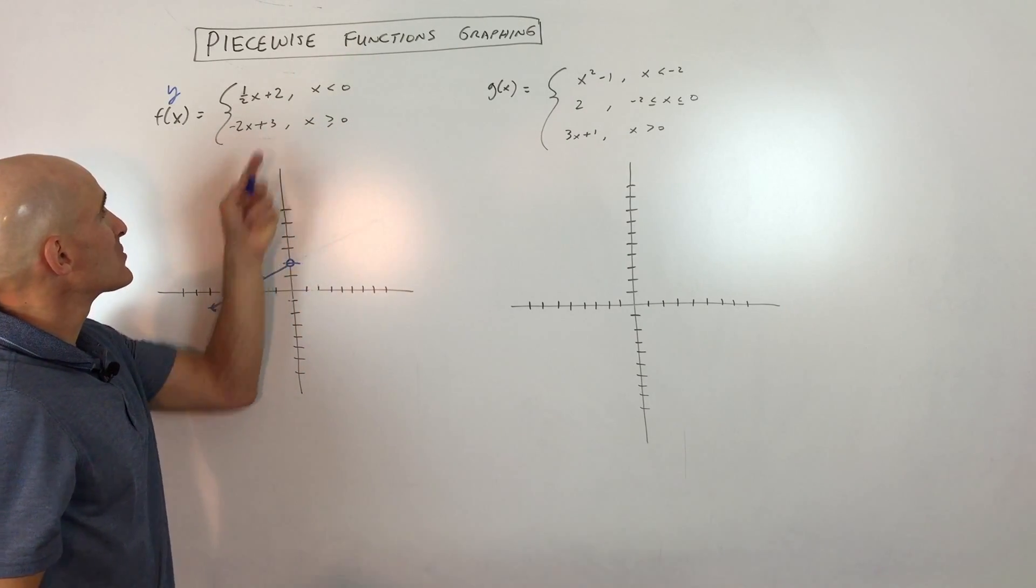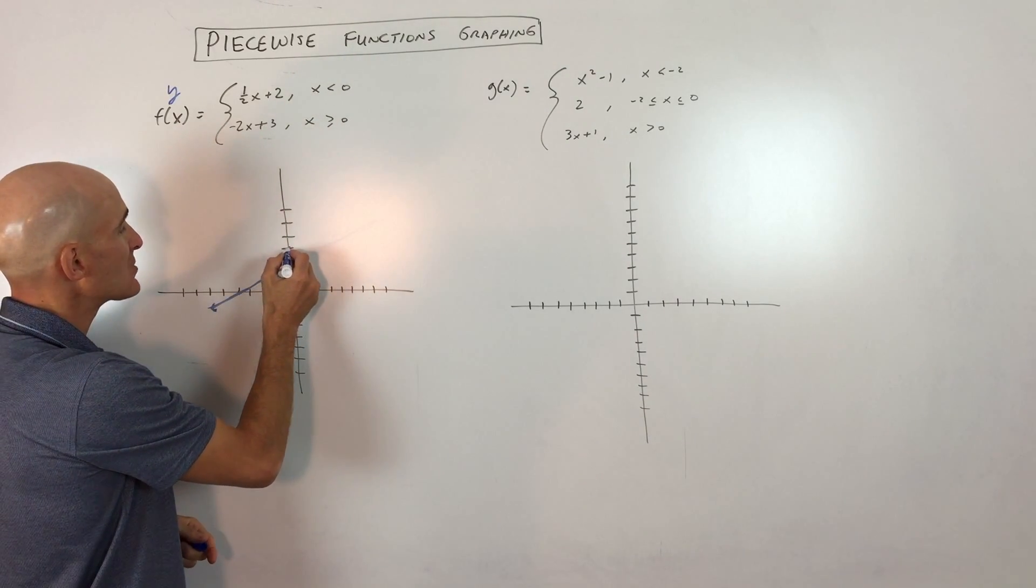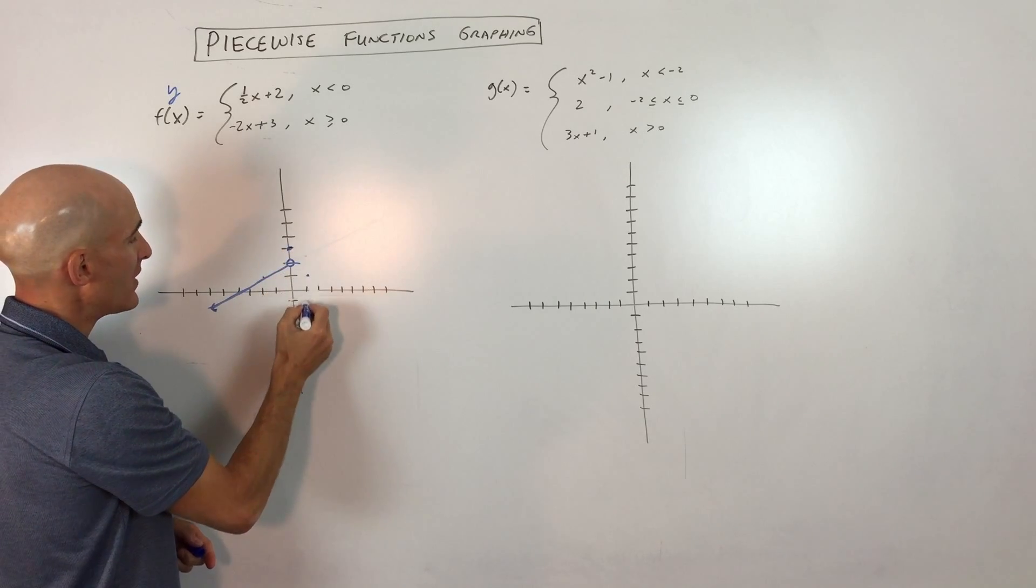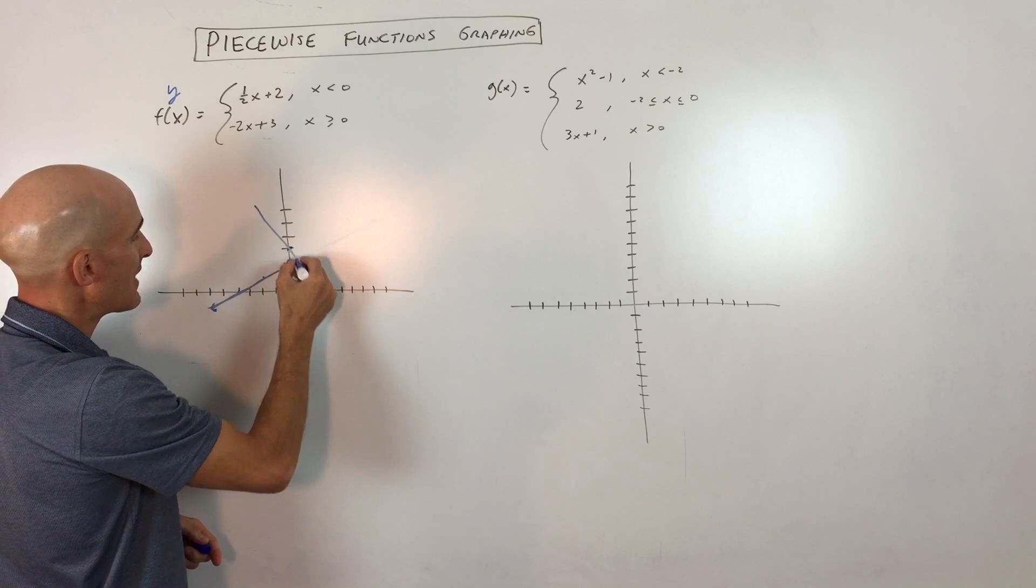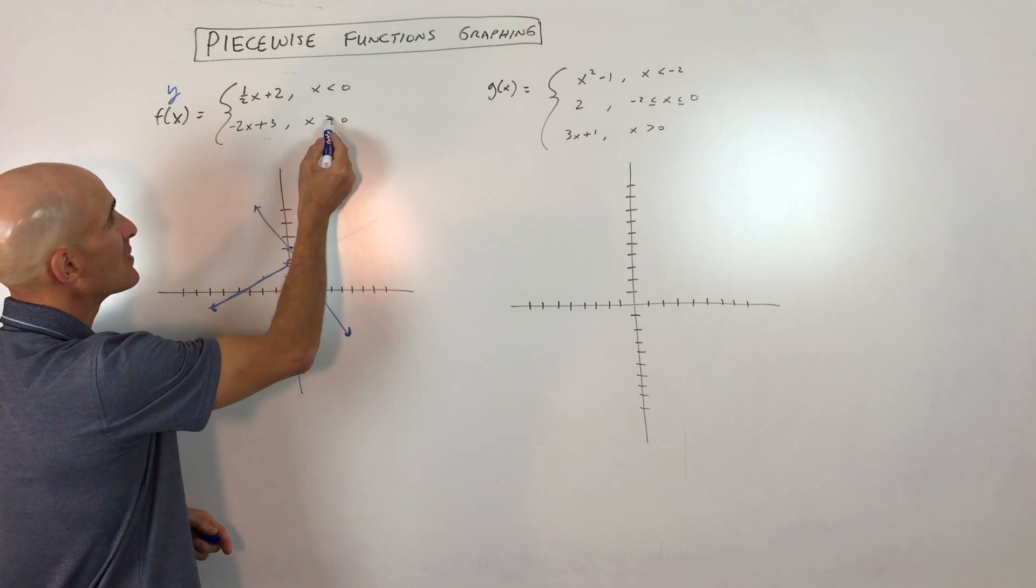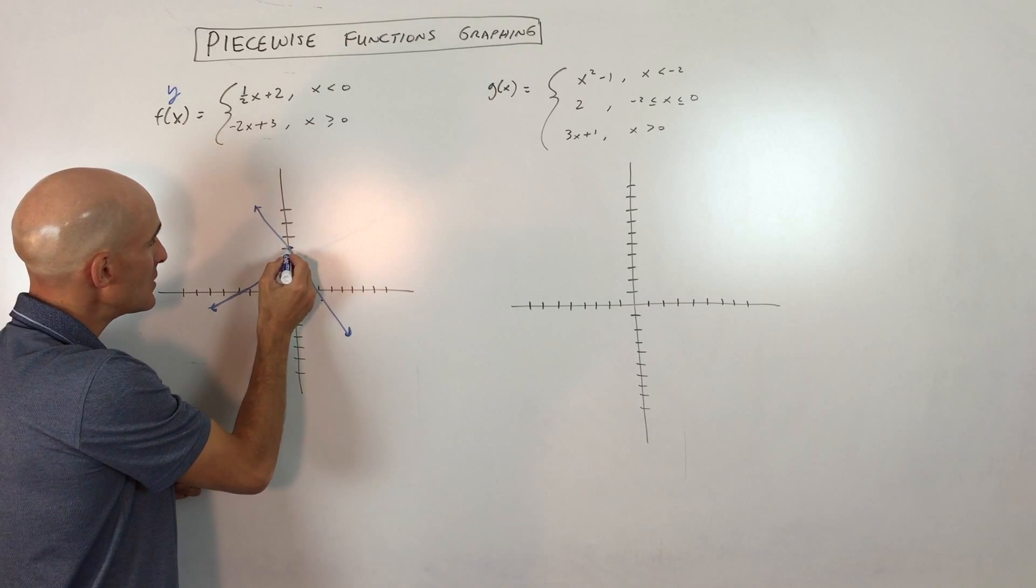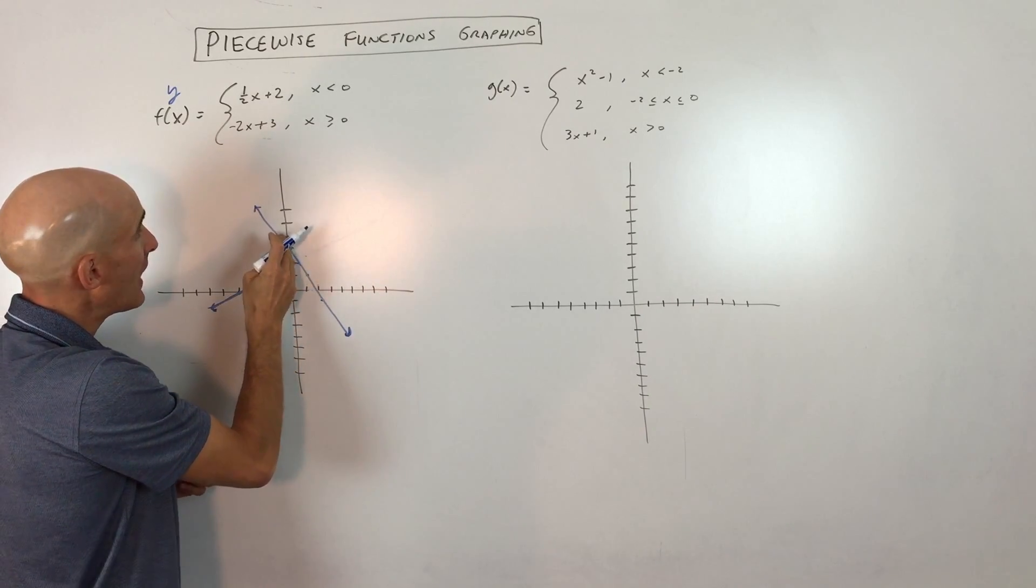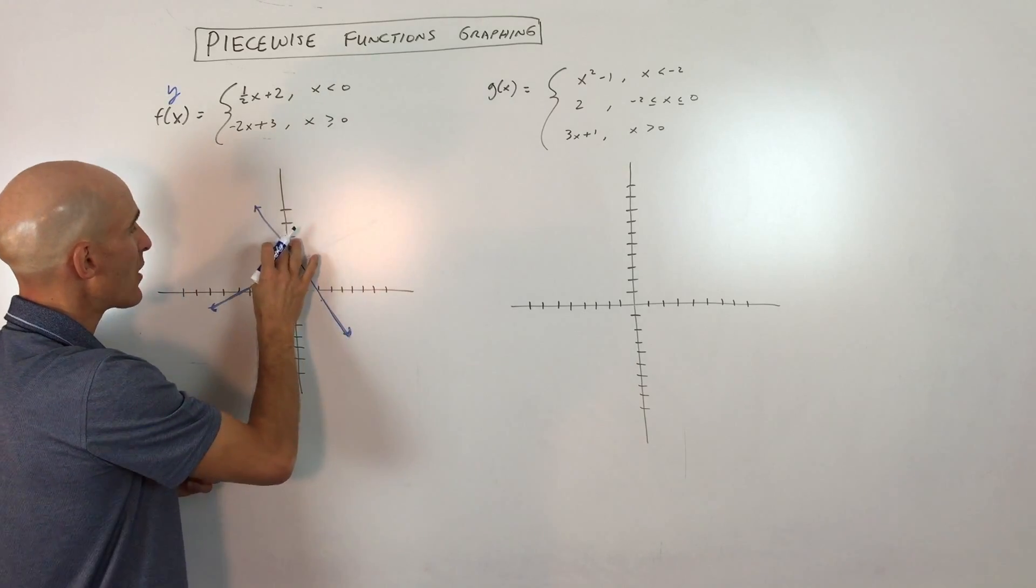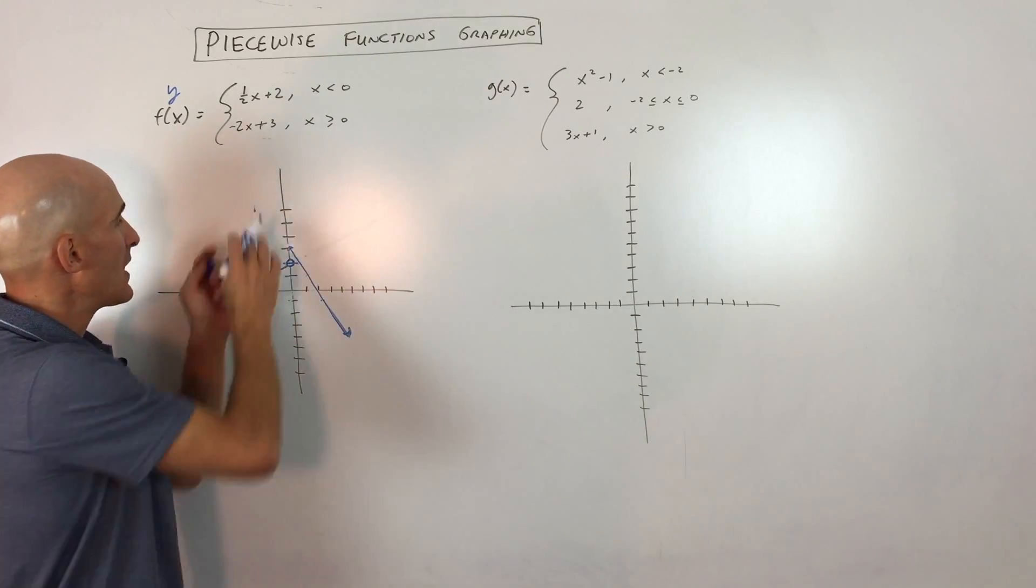The second part, we're going to graph y equals negative 2x plus 3. So the y-intercept is 3, and the slope is down 2 over 1, down 2 over 1. So you can see this line looks like this. Now notice this one says x is greater than or equal to 0. So it equals 0, see when x is 0, and greater than, meaning to the right. So we're going to be on this part of the graph, this part we don't need.